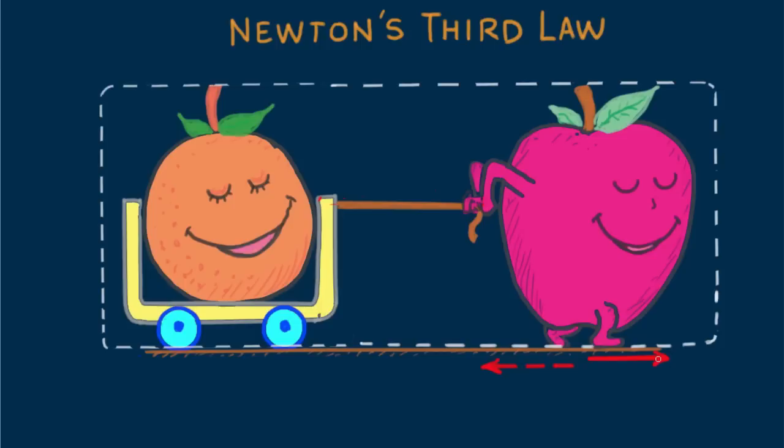This is the external force that acts on the system. Since the dashed vector doesn't act on the system, I'm erasing it.